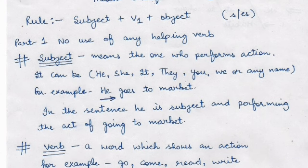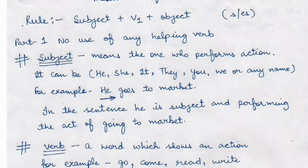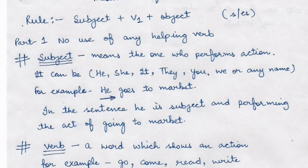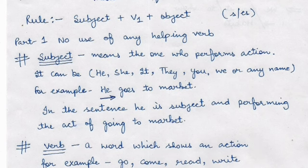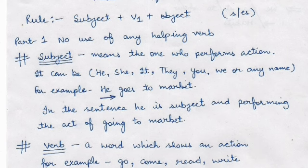Helping verbs are: is, am, are, were, being, been, has, have, had. There is no use of any helping verb in this tense. Now we will have a look at the subject, verb, and object.